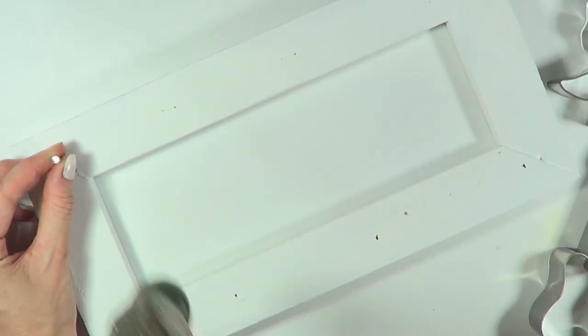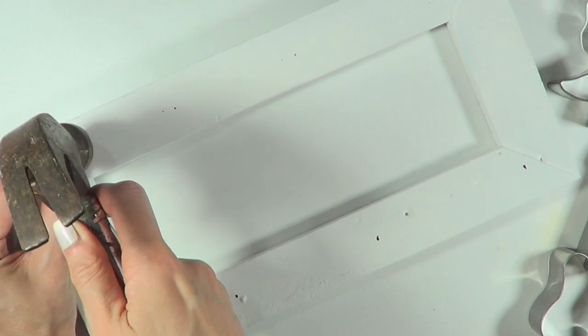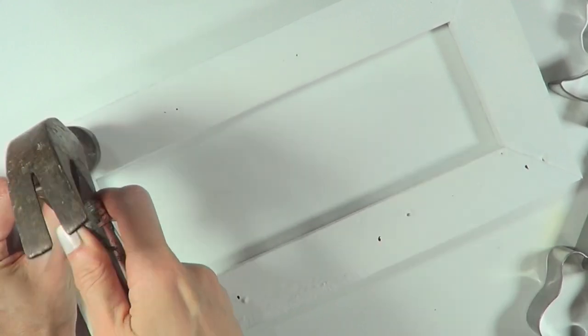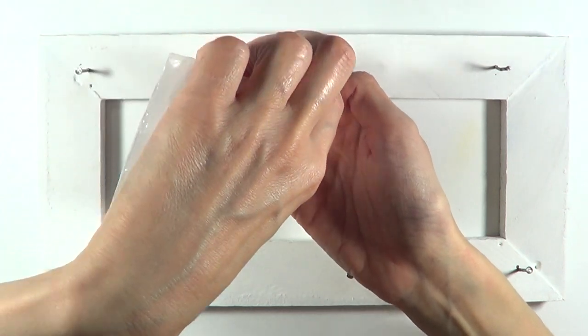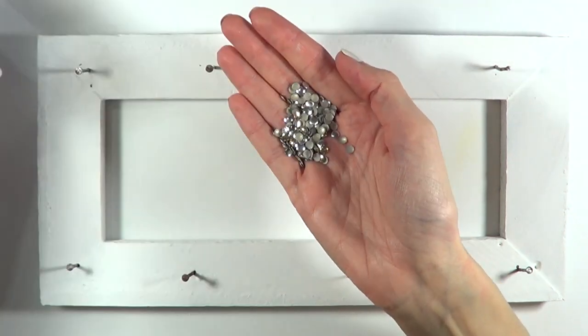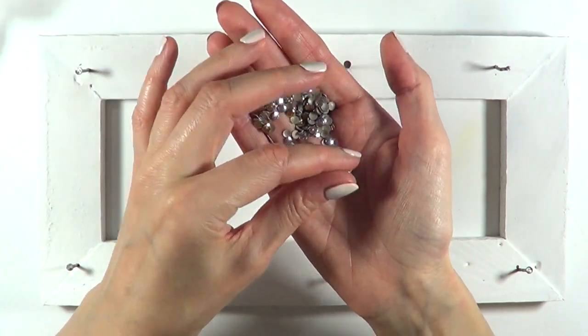And I'm just going to be using some nails and I'm just going to hammer them on the spots that I marked. Then I'm going to be decorating this because I don't like the nails as they are. I just want them to be smoother on top.